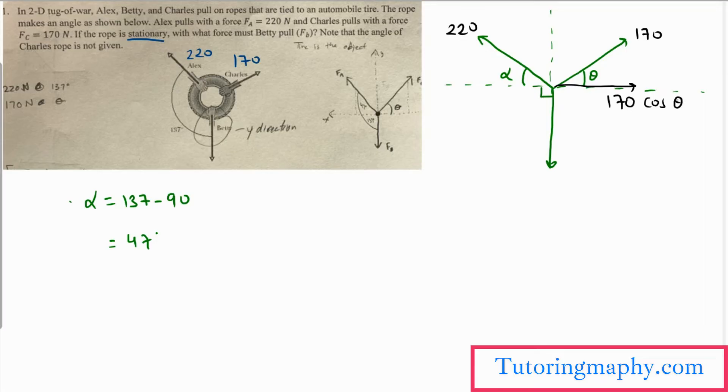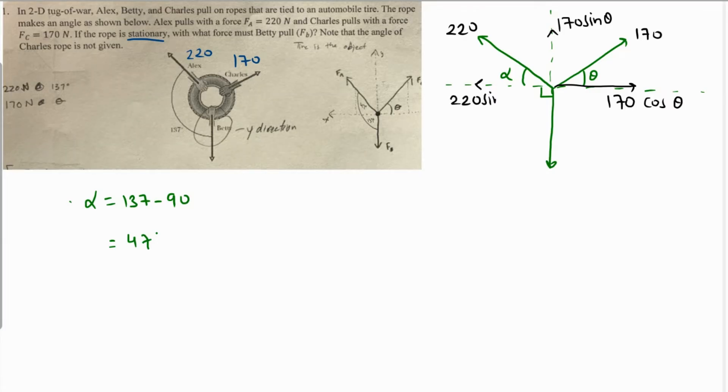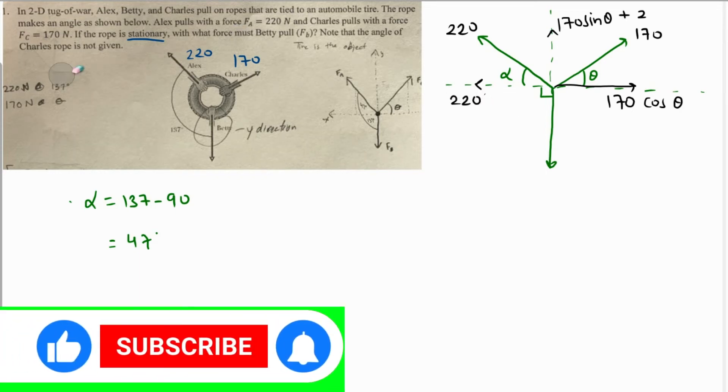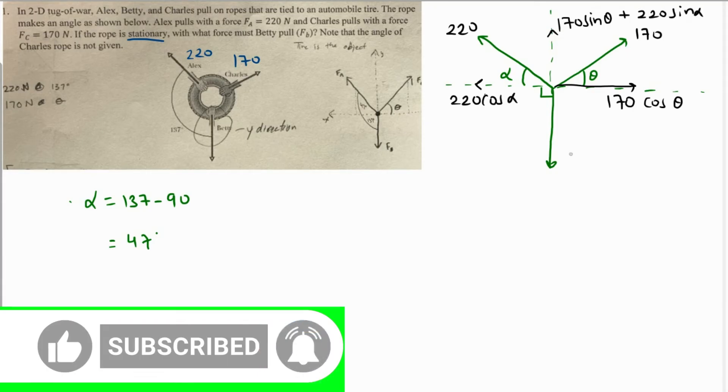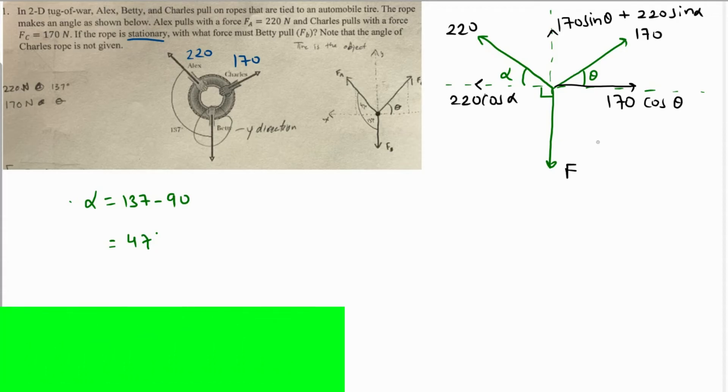This will become 170 cosine of theta, and this will become 170 sine of theta. This will become 220 sine of alpha, and this will become 220 cos of alpha. This will become 220 sine of alpha, and this is the unknown force F which we have to find.